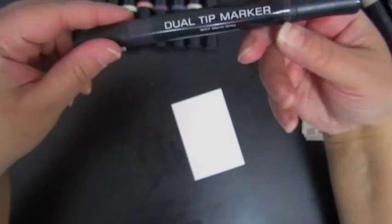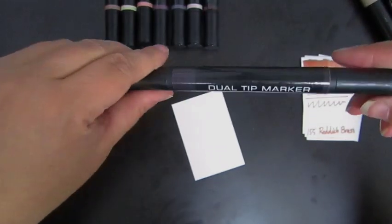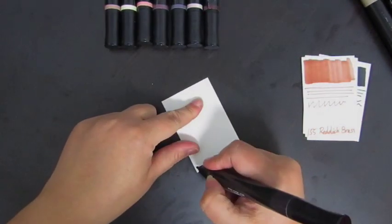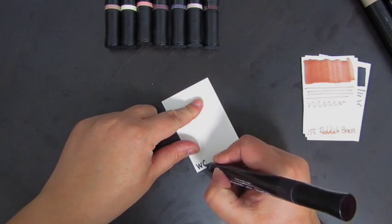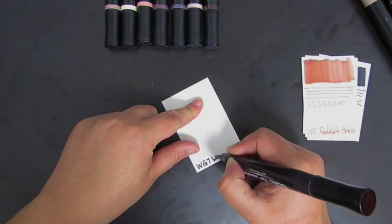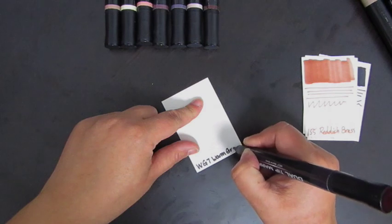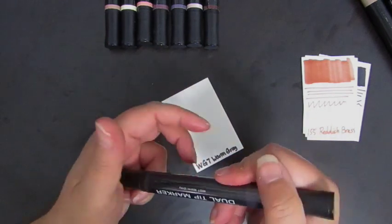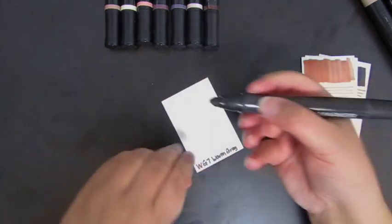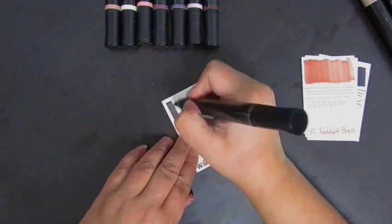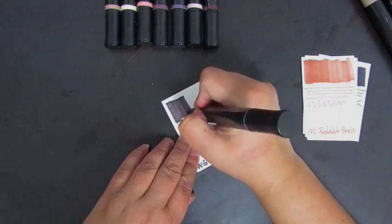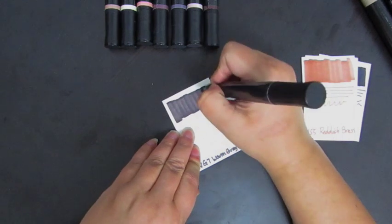This one is another warm gray. This one's warm gray seven. So let's just do WG7 warm gray. And let's see how this one, this one is definitely more of a gray, still on the brown side.